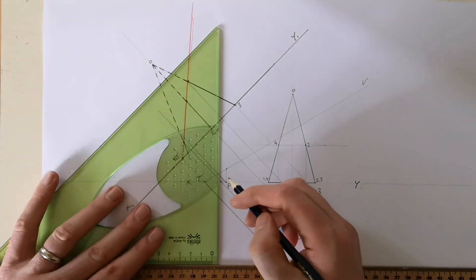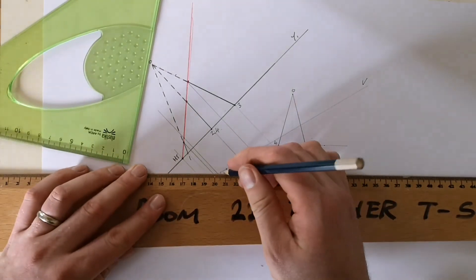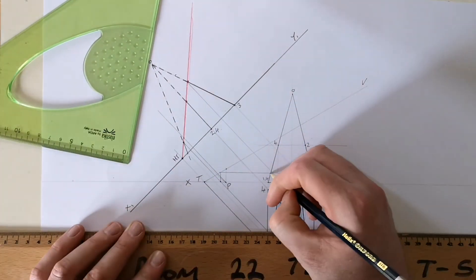Take it straight up, and where it hits the vertical trace, you bring it back in. So that's point number one.